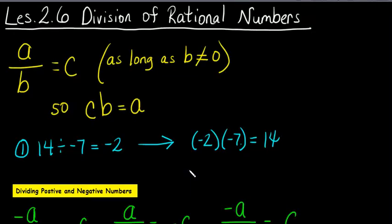We have talked about multiplication of rational numbers, so now we're going to talk about division of rational numbers. This is Lesson 2.6. In my little fancy way here, I showed you that if a number A is divided by a number B, it's going to equal the quotient C, as long as B doesn't equal zero, and I'm going to tell you why in a few minutes.